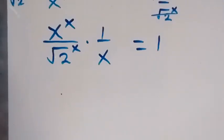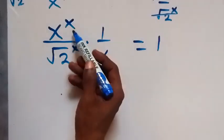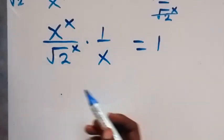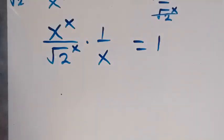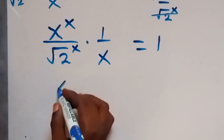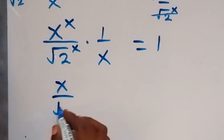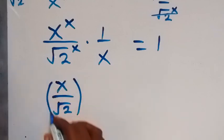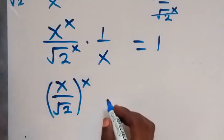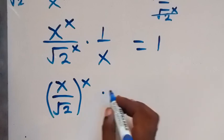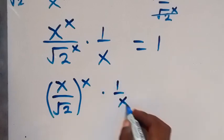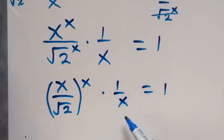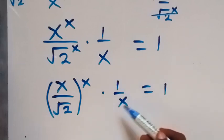From here we have the same power, so we can bring everything inside and take the power out. By the law of indices, this gives us x over root 2, all raised to the power of x, then multiplied by 1 over x, equals 1.